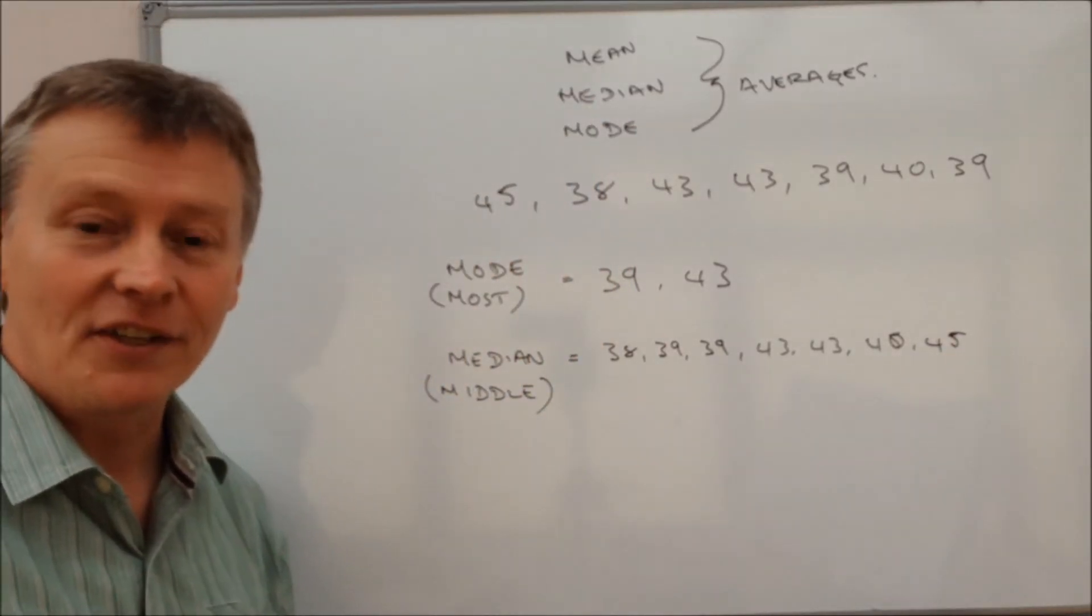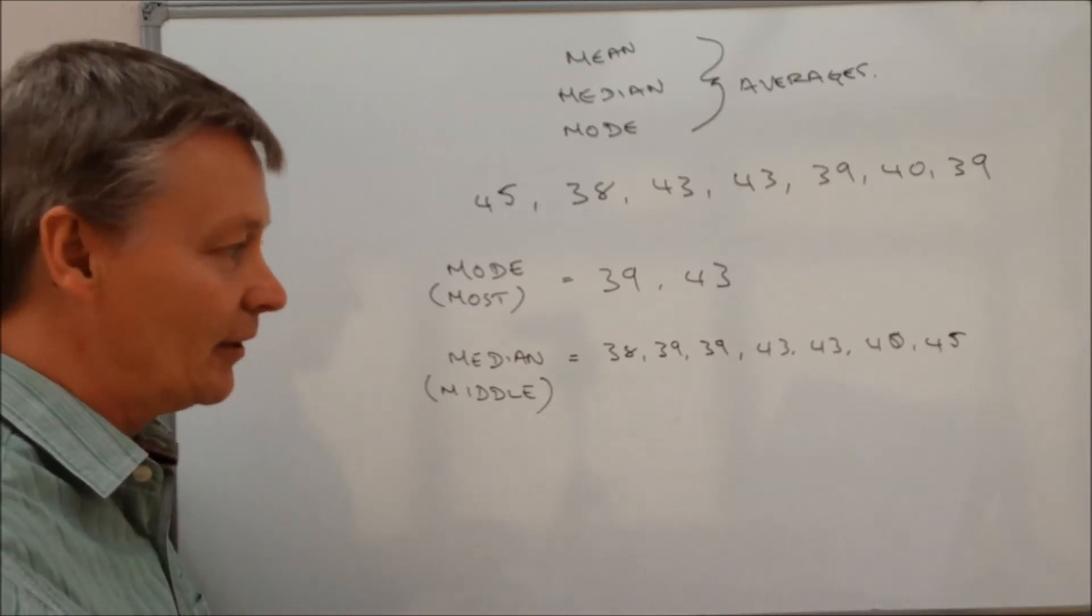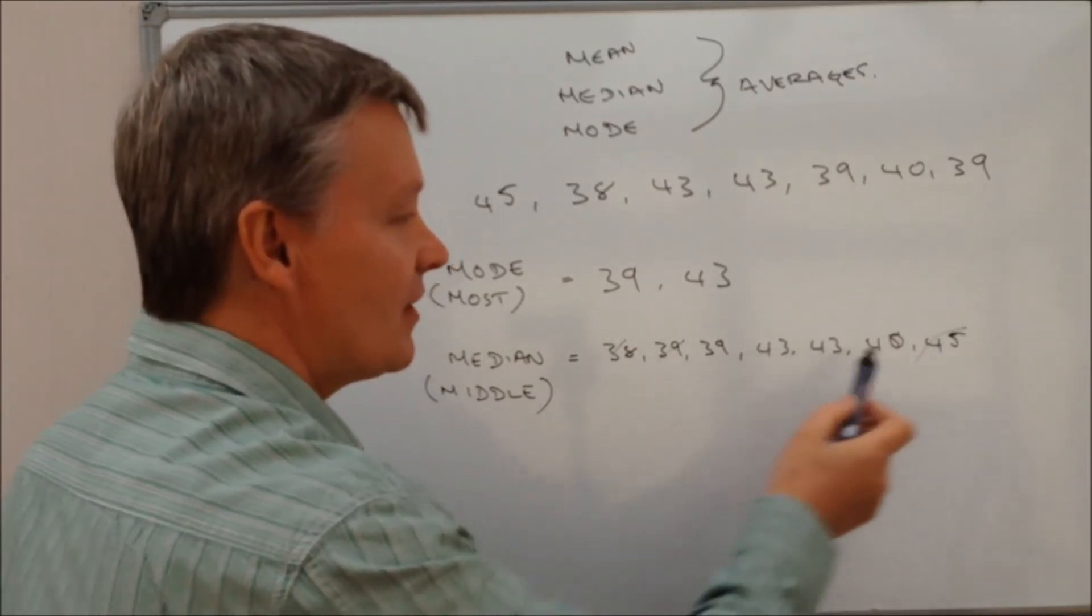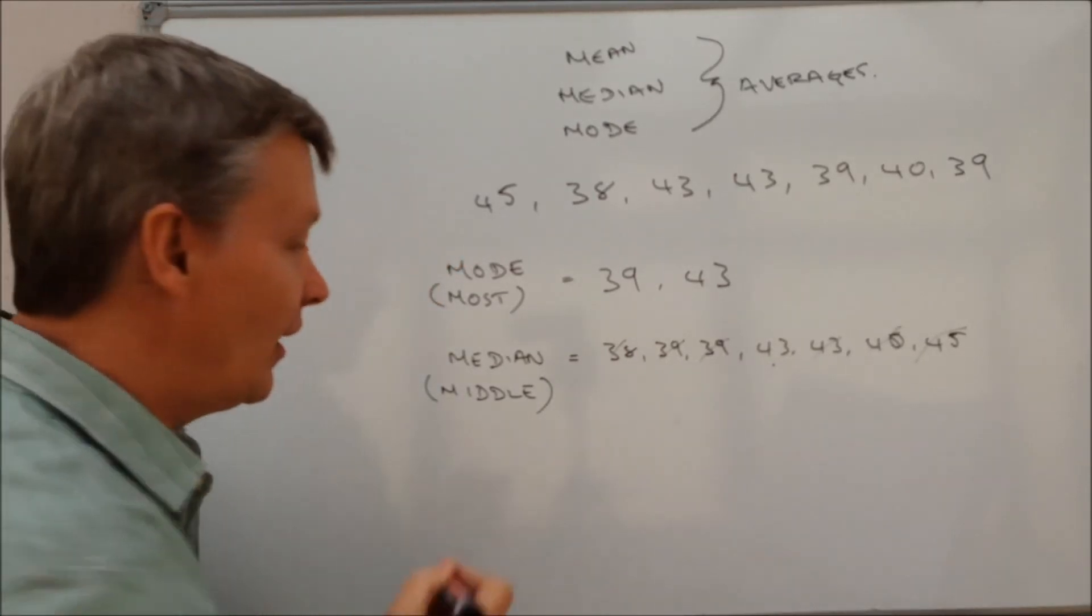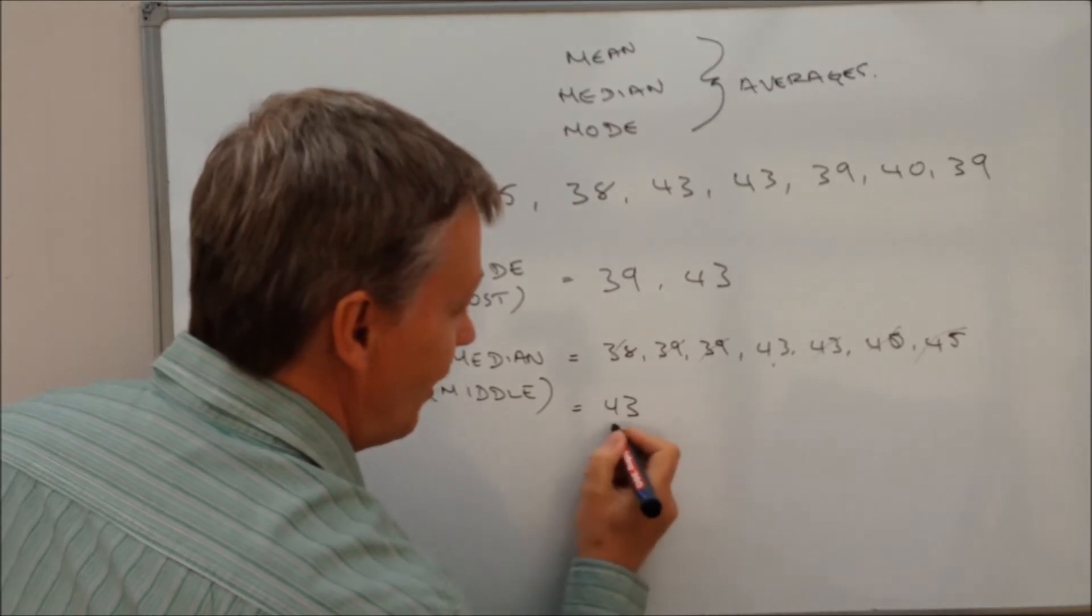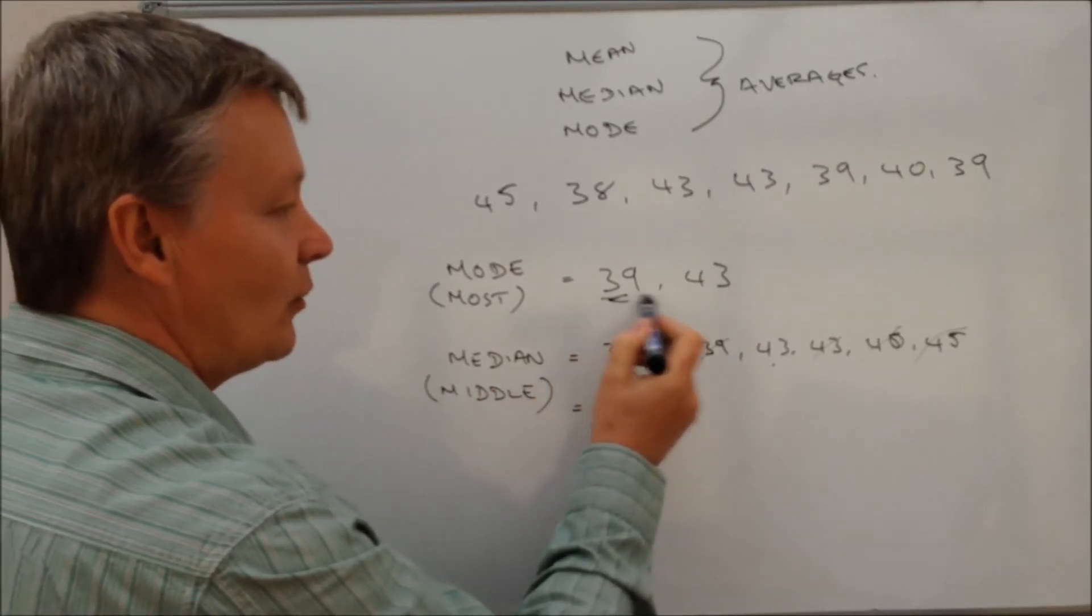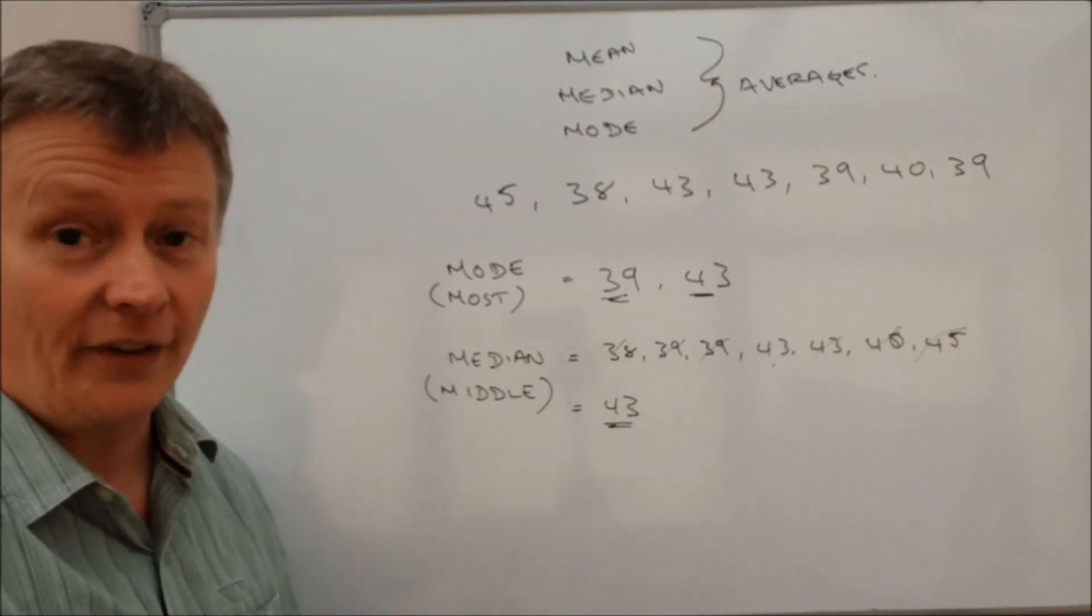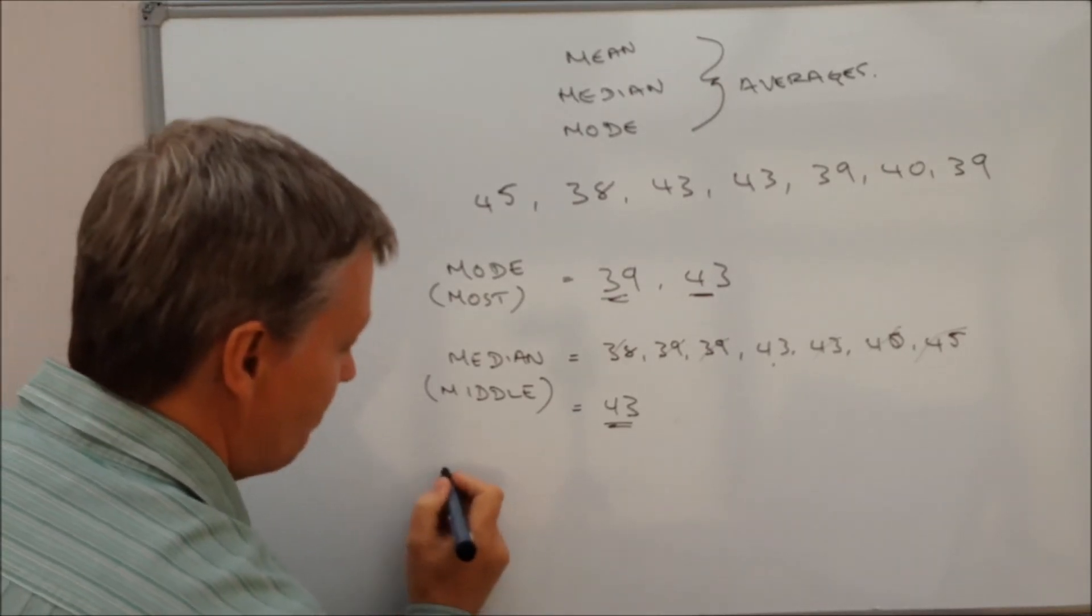And generally what they'll do with these is they'll give you a fairly obvious way of getting to the middle number. Now what you can do is you can cross out the extremities, something like that, and you can work through. And so that's the middle number in this particular case is 43. So the answer to this question is going to be 43 for the median. Now if you have two numbers in the middle, you do work out the average of those two numbers, which is the final little bit, which is the mean.